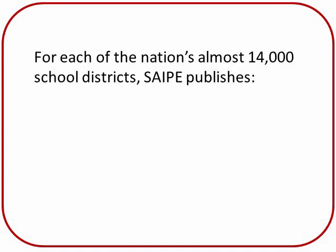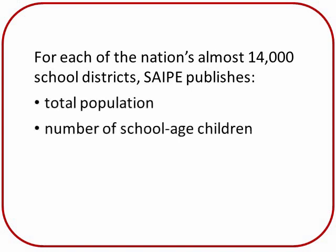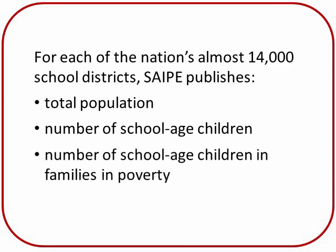The statistics we need for each school district are total population, number of school-aged children, and the number of those children whose families are in poverty. Total population and number of school-aged children, those ages 5 to 17, are already available from Census Bureau population estimates. The rest of this tutorial looks at the process for estimating the third statistic.